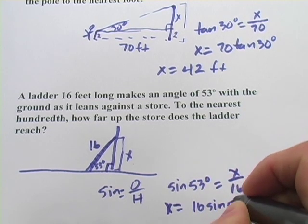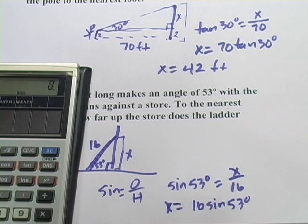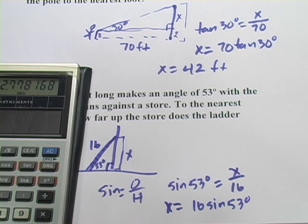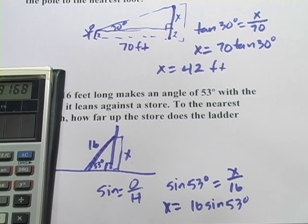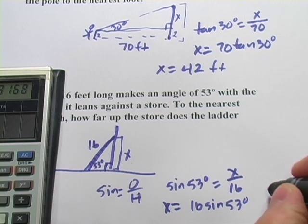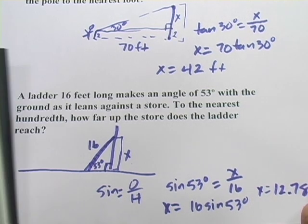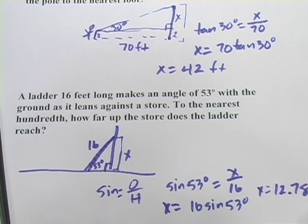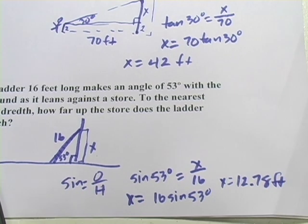So let's plug that one in on the calculator, 53 sine times 16, and I get 12.778, let's see, to the nearest hundredth, so 12.78, and that would be feet. So that's a little bit of work in applying some trig.